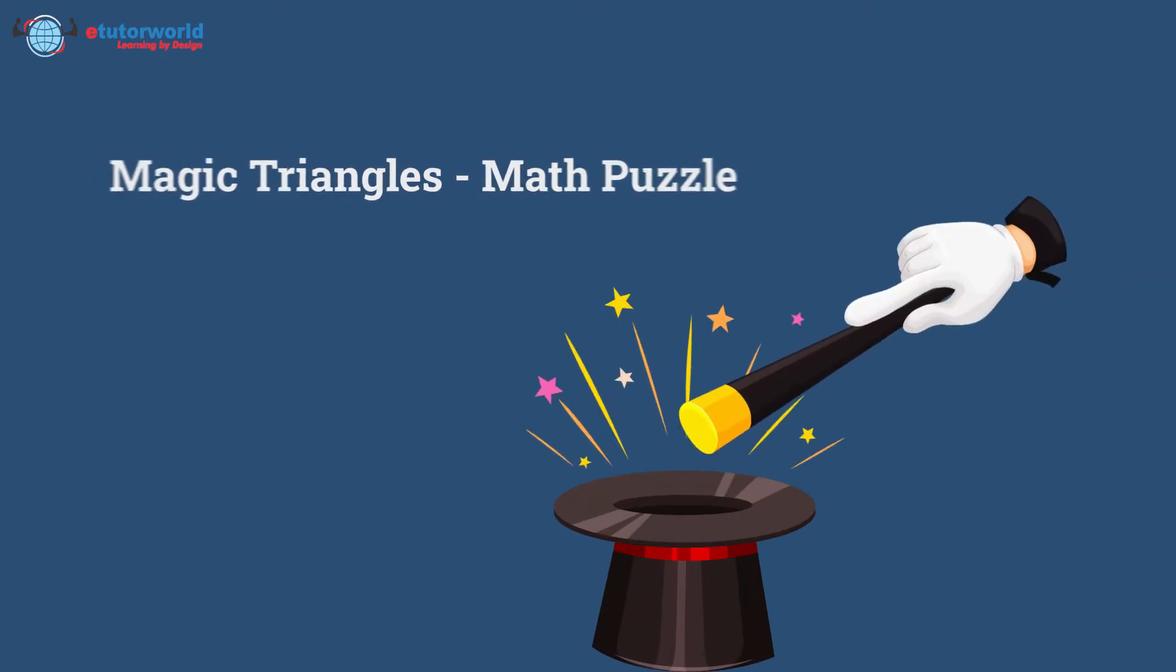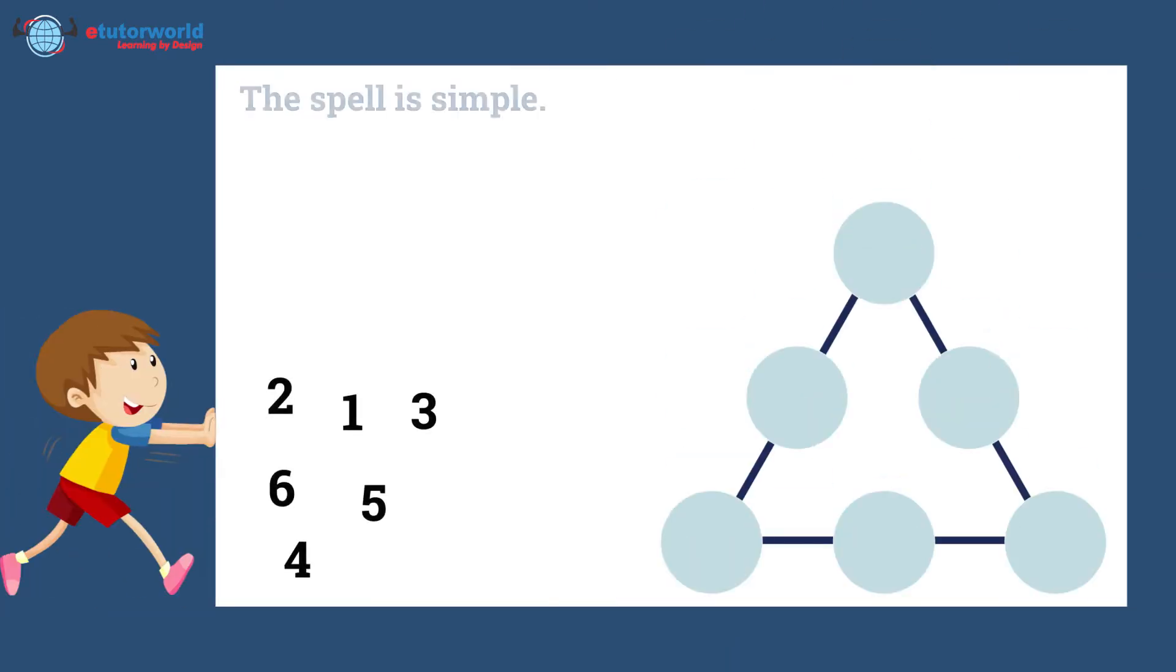Magic Triangles, Math Puzzle. The spell is simple. Place the numbers so all sides have the same sum.